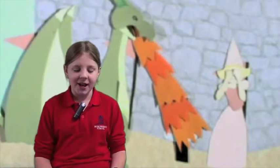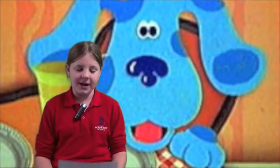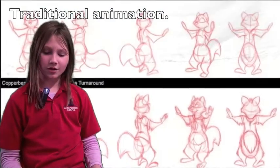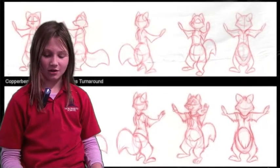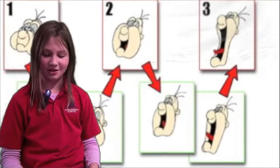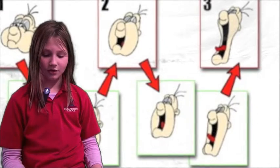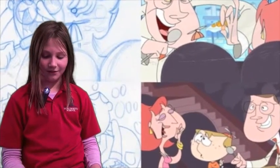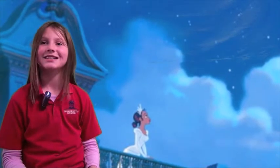A type of stop motion animation using two-dimensional pieces of material such as paper or cloth. In the animation, individual frames are hand-drawn and traced onto acetate sheets. Each sheet is then photographed with a set background and then combined together to create a moving image.